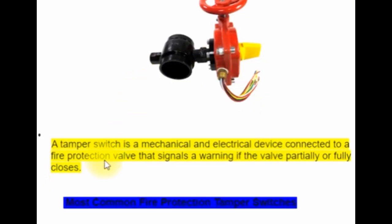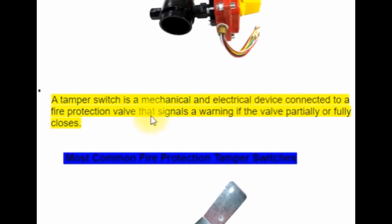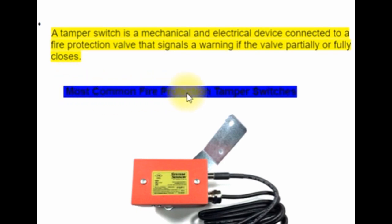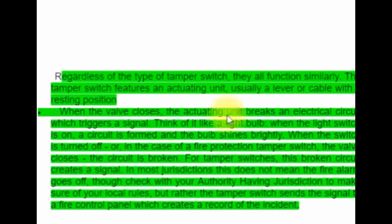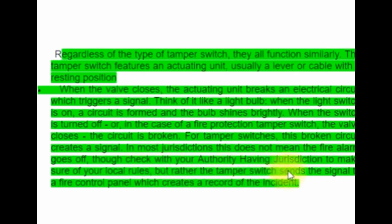A tamper switch is a mechanical and electrical device connected to a fire protection valve that signals a warning if the valve partially or fully closes. Most common fire protection tamper switches function similarly. The tamper switch features an actuating unit, usually a lever or cable, with a resting position. When the valve closes, the actuating unit breaks an electrical circuit which triggers a signal. Think of it like a light bulb - when the light switch is on, a circuit is formed and the bulb shines brightly. When the switch is turned off, or in the case of a fire protection tamper switch the valve closes, the circuit is broken. For tamper switches, this broken circuit creates a signal. In most jurisdictions, this does not mean the fire alarm goes off. Check with your authority having jurisdiction to make sure of your local rules. Rather, the tamper switch sends the signal to a fire control panel which creates a record of the incident.